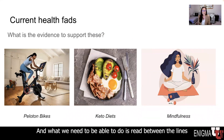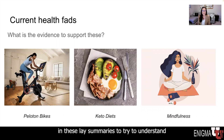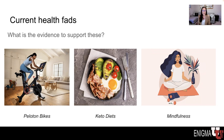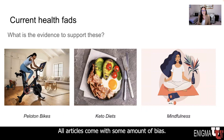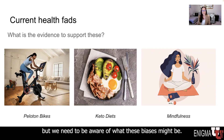What we need to be able to do is read between the lines in these lay summaries to understand what was the actual science behind the summary, and thus, is it actually applicable to me? Do I believe it? Because often these lay summaries come with a bias on top of them. All articles come with some amount of bias — scientists are absolutely not immune from bias — but we need to be aware of what these biases might be.